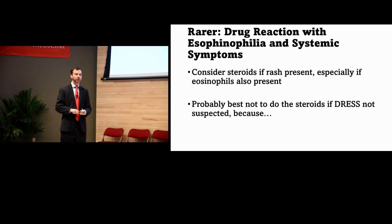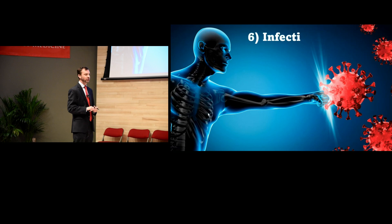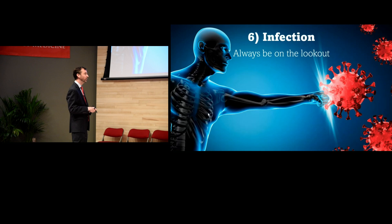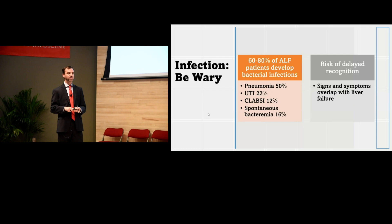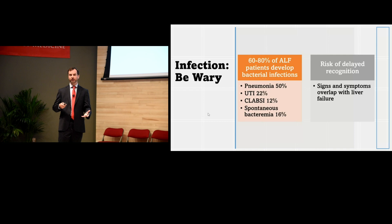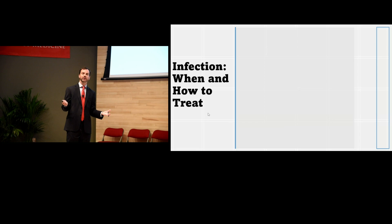About 60 to 80% of acute liver failure patients will develop a bacterial infection. Pneumonia is the most common site, but infection can develop basically anywhere. Acute liver failure and sepsis look very similar clinically, making it hard to tell if they have an infection. This raises the question: when do I start antibiotics?